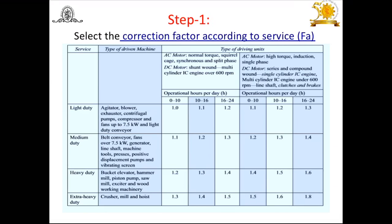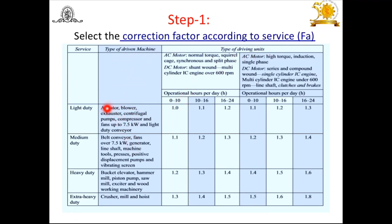To select belts from the catalog, standard practices are adopted as per Bureau of Indian Standards and some manufacturing companies. Standard data available in data books and codes will be referenced. Step 1 is to select the correction factor according to the service. This factor depends on type of driven machine, type of service (light, medium, heavy, or extra heavy duty), type of driving machine, and hours of service per day — whether 0 to 10, 10 to 16, or 16 to 24 hours.